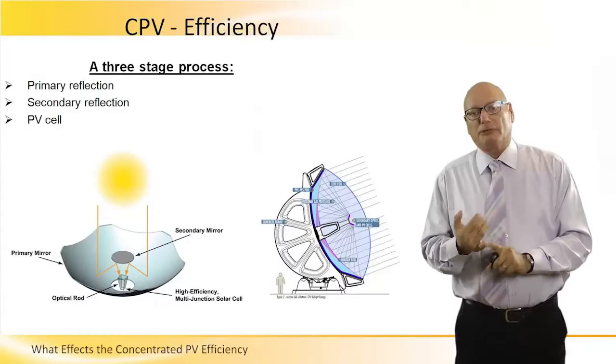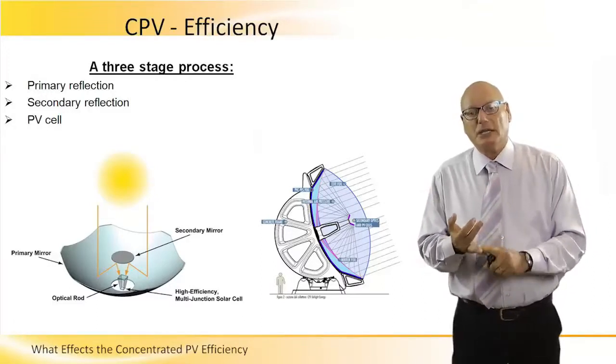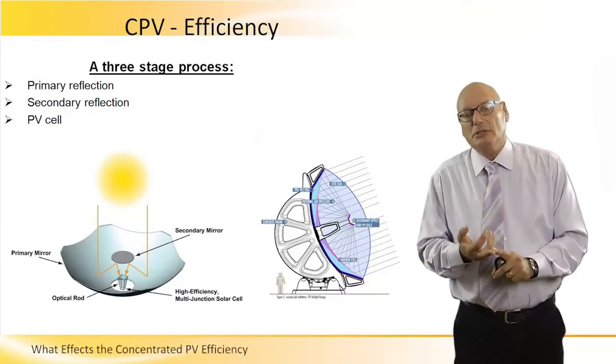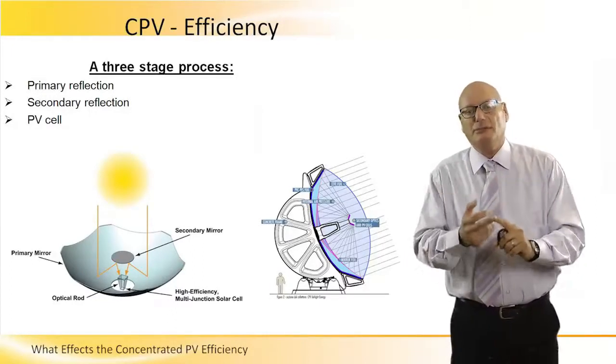First, we lose in the primary reflection. Secondly, we lose in the secondary reflection. And then there is a set of losses in the PV cell itself.